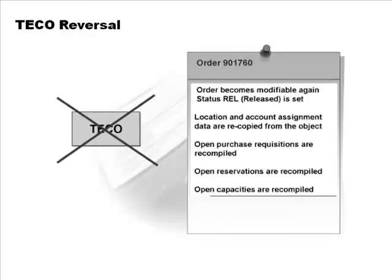It's possible to reverse a completion because what we thought was complete may not really be complete. When you reverse it, all those other processes get reversed. For example, the order goes back to its old state and is no longer in the TECO status. The location and account assignment object are recopied from the object because the order is not really complete yet.